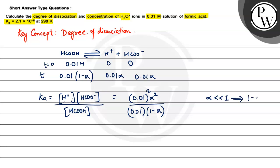So what we can do is, here 0.01 cancel and 1 minus alpha can be written as 1. So this can be approximated to alpha squared into 0.01.